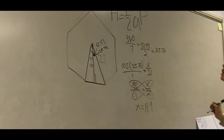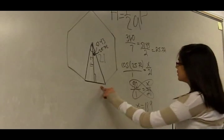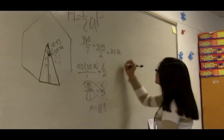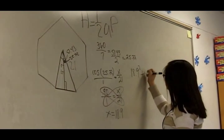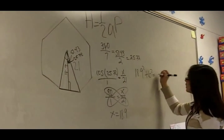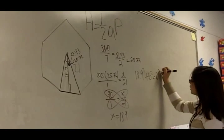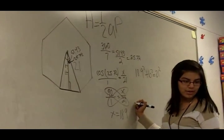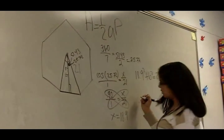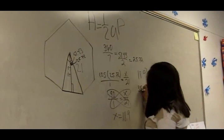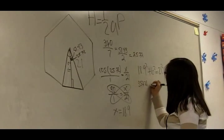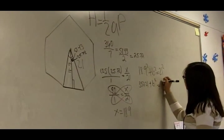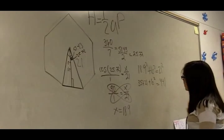Now you can use Pythagorean theorem to find the missing side. 18.9 squared plus b squared equals 21 squared. 18.9 squared is 357.21 plus b squared equals 441.